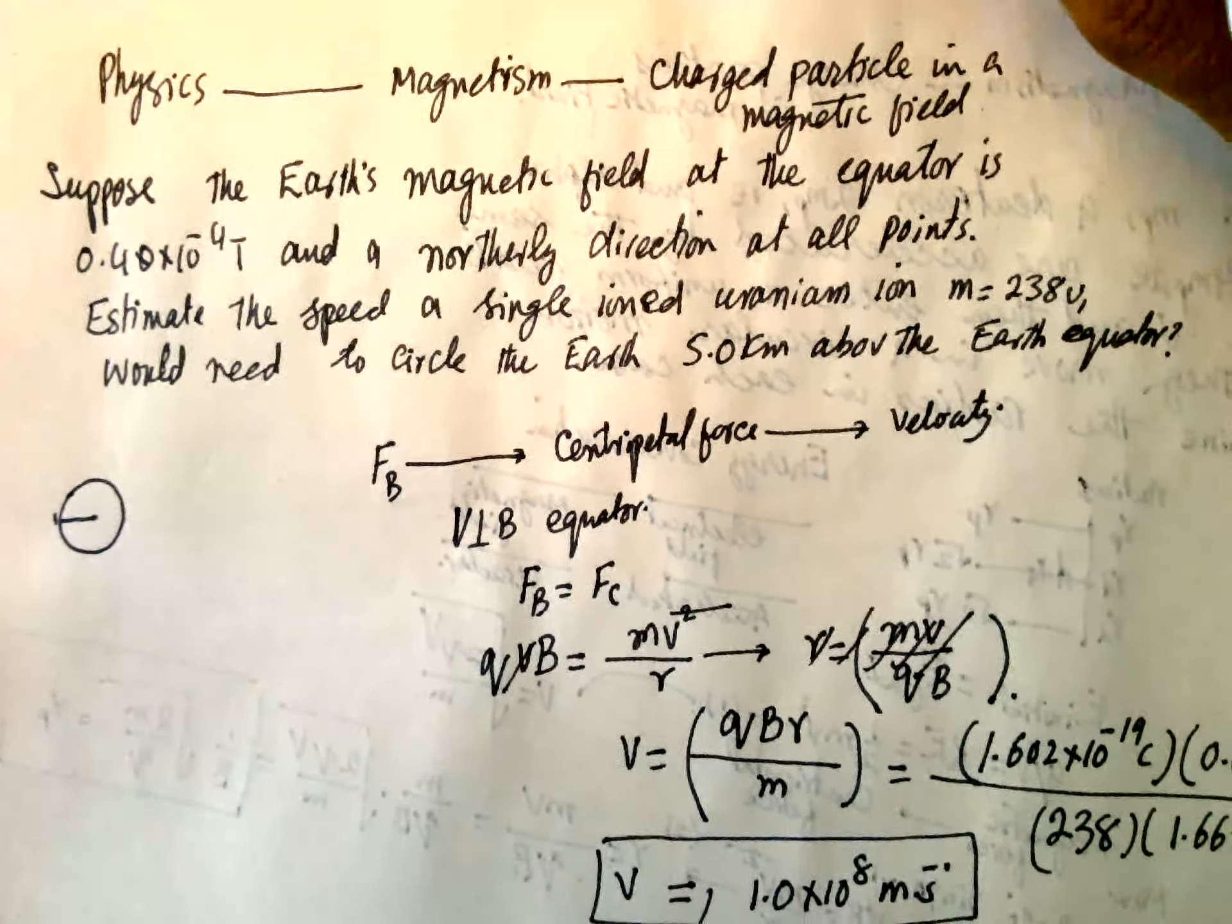So this is Earth and this is the radius and 1 km above.